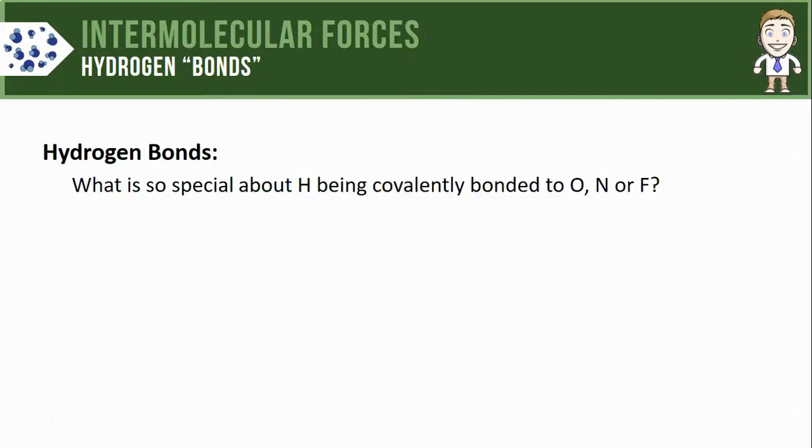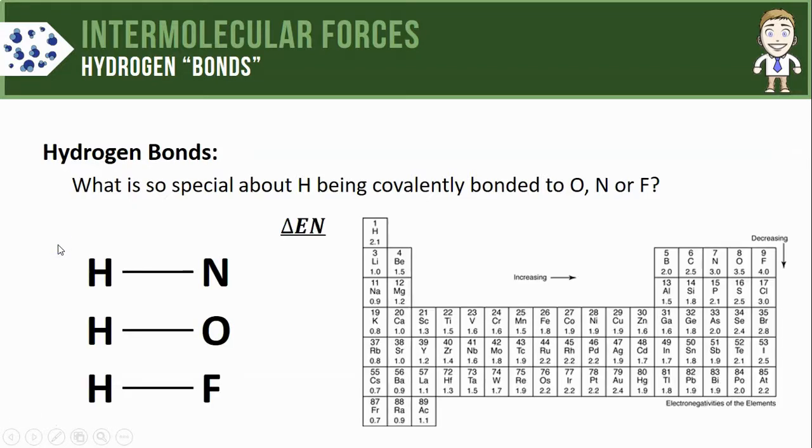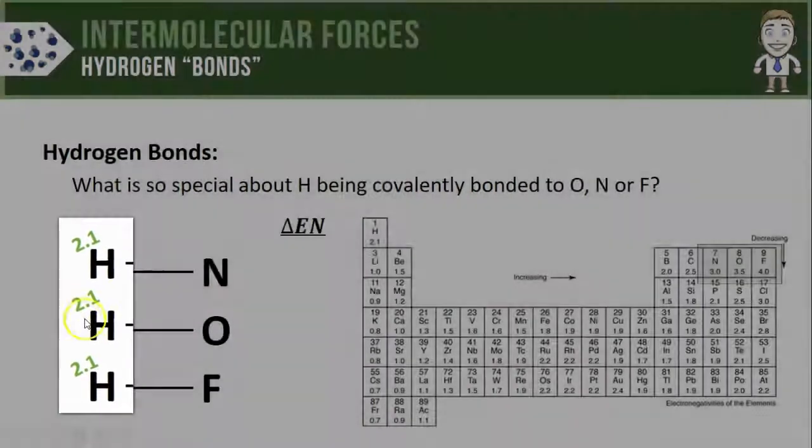So let's close the video by clarifying what's so special about these qualifications. In particular, why do we need hydrogen covalently bonded to O, N, or F for the dipole-dipole force to count as a hydrogen bond? To understand this, let's examine the three bonds in question and look more closely at their electronegativity values. The first thing to notice is that hydrogen is on the left-hand side of the periodic table and, at least for a non-metal, has a pretty low electronegativity of 2.1.